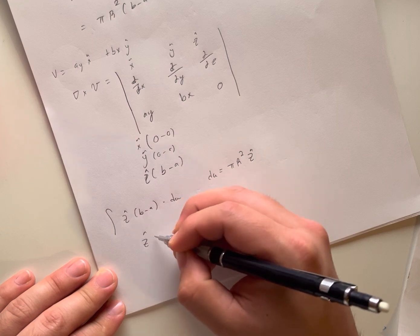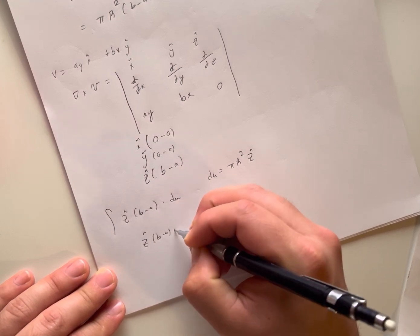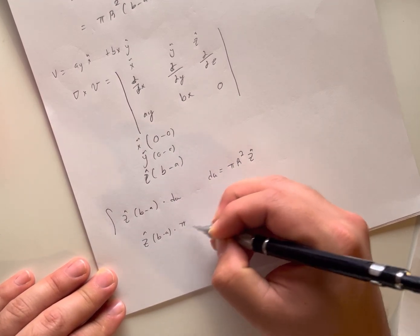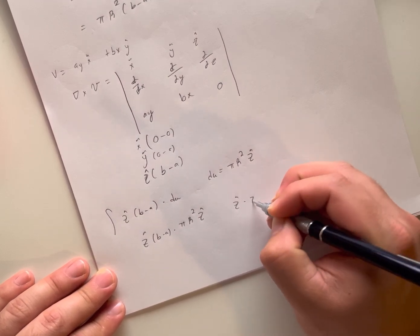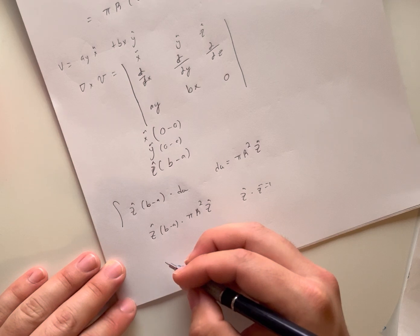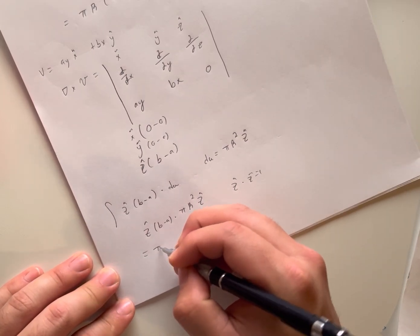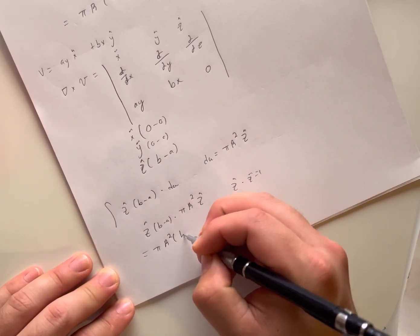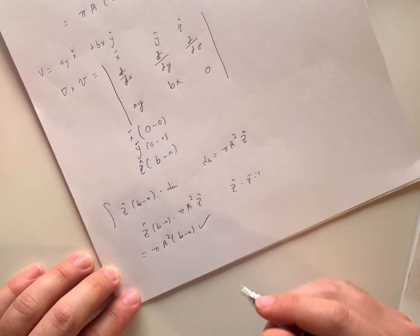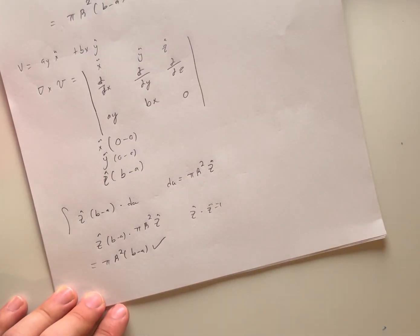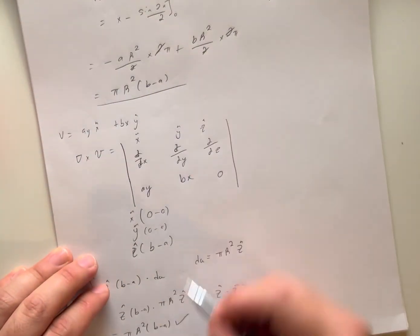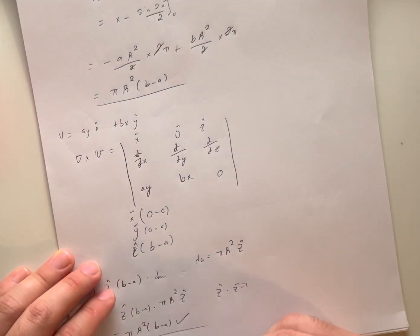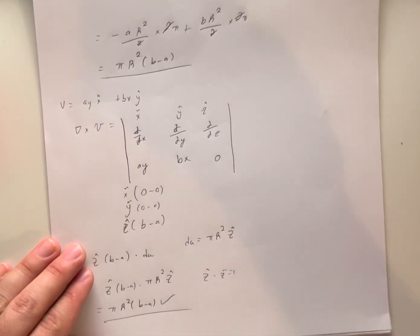Z-hat dot z-hat is equal to 1, so we get the final answer as pi*R^2*(b - a), which is the same answer we got for doing the line integral here, proving that Stokes' theorem is valid.